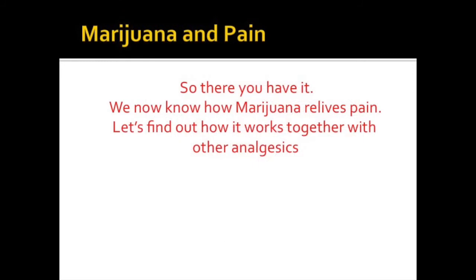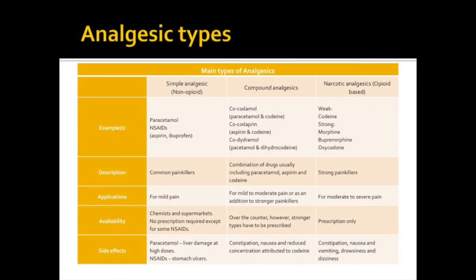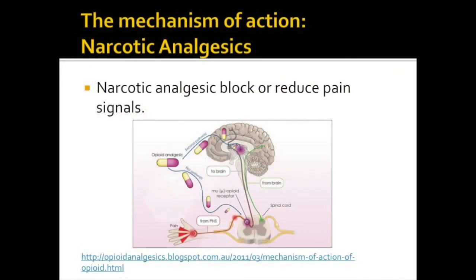So there you have it — we now know how marijuana relieves pain. Let's find out how it works together with other analgesics. Synergy between drugs is a lot more common than you may think. For example, a combination of simple analgesics can be used to enhance the effects of stronger analgesics in order to reduce drug dependence and addiction. Narcotic analgesics work by binding to opioid receptors and then activating potassium channels and blocking calcium channels, with the overall effect of reducing neuronal excitation and hence producing analgesia.